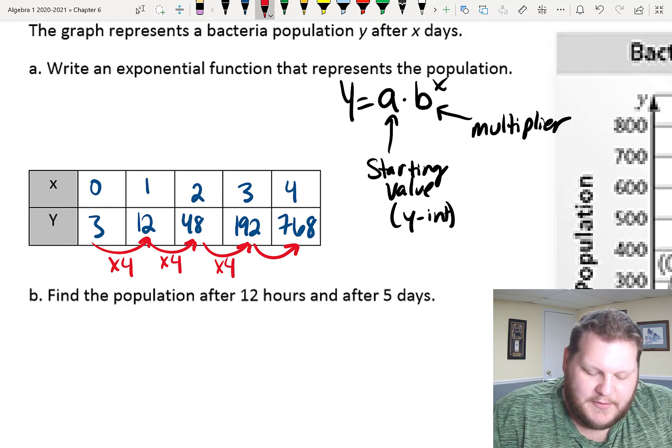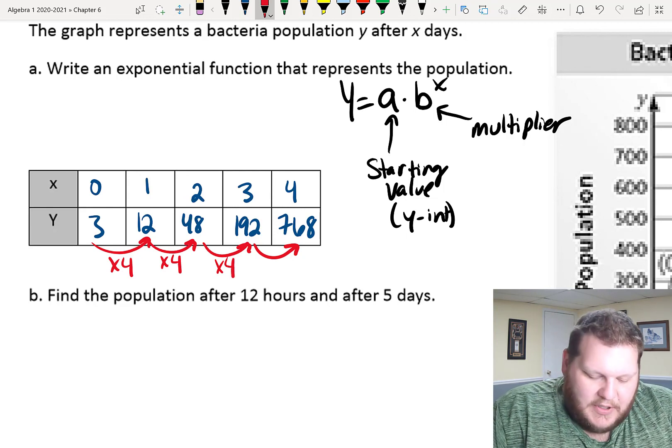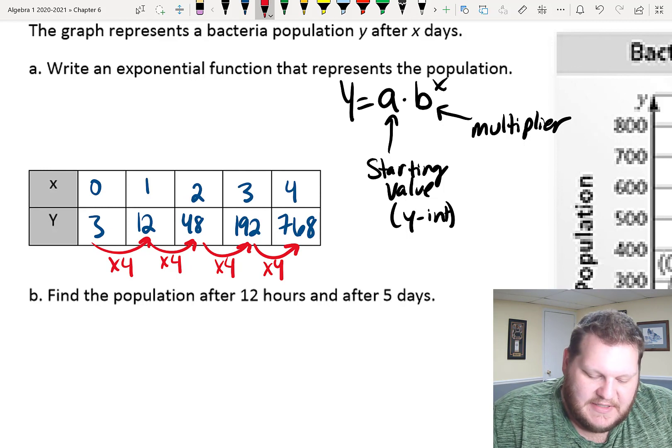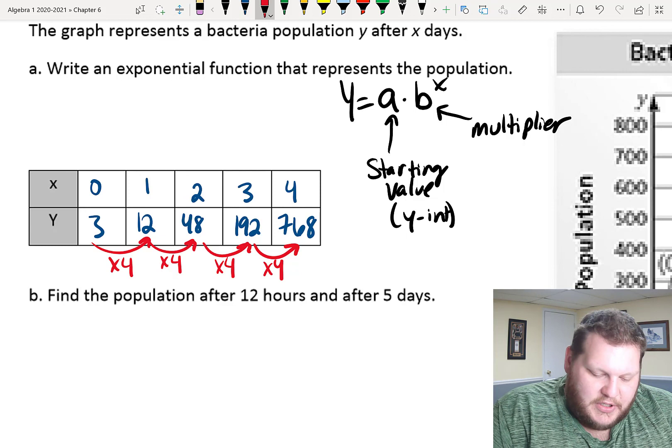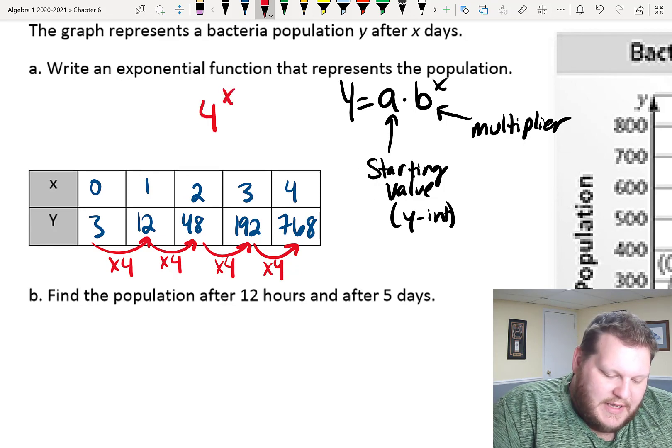So, if I just check some more of those, 12 times 4 does give me 48. If you use the calculator, 48 times 4 is 192. 192 times 4 is 768. So, we have that my multiplier, my b-value is 4, which is good. We've got 4 to the x-power.